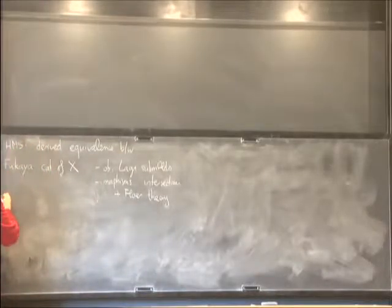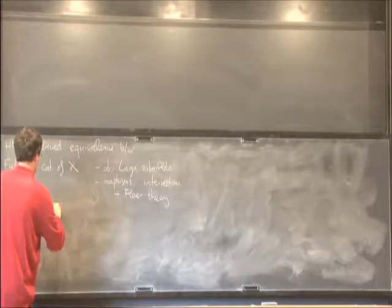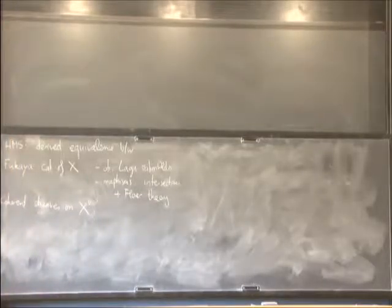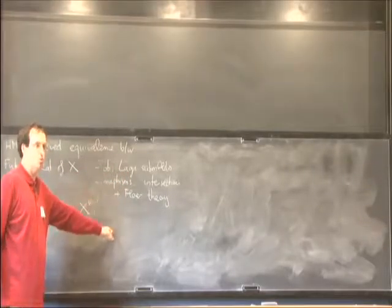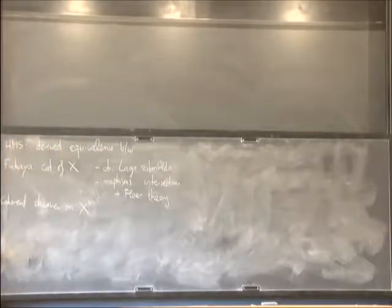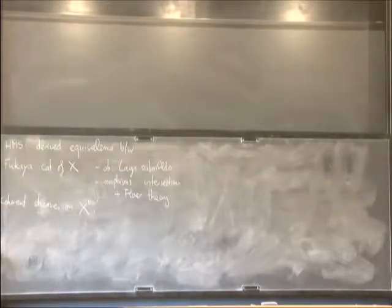On the other side, we're supposed to look at coherent sheaves on the mirror of X. While you don't have a one-to-one correspondence — it's not going to be the case in general that a Lagrangian submanifold corresponds to a sheaf and vice versa — it's only a derived equivalence. That means after you enlarge things sufficiently to get the right algebraic structures, by passing to chain complexes of such objects and working up to homotopy, you can get an easier and better match.